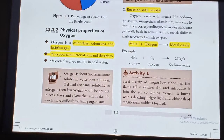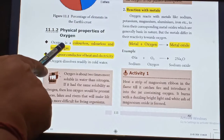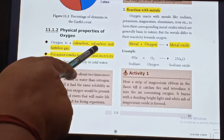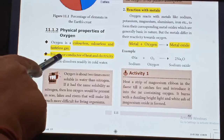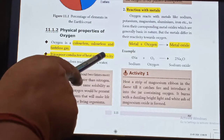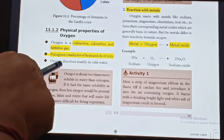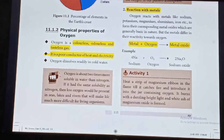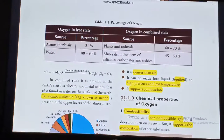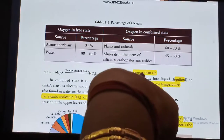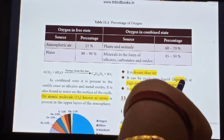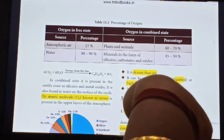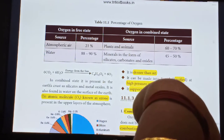Physical Properties of Oxygen: Oxygen is a colorless, odorless and tasteless gas. It is a poor conductor of heat and electricity. Oxygen dissolves readily in cold water. Oxygen is denser than air. It can be liquefied at high pressure and low temperature.